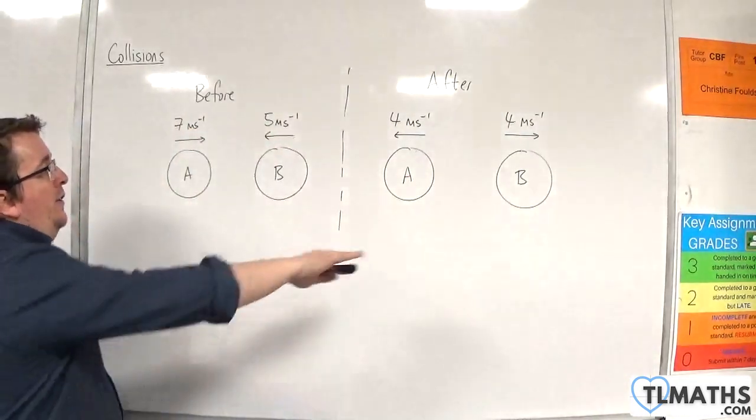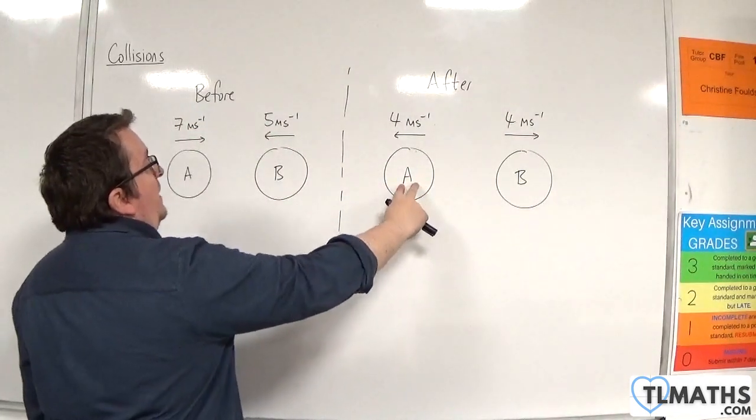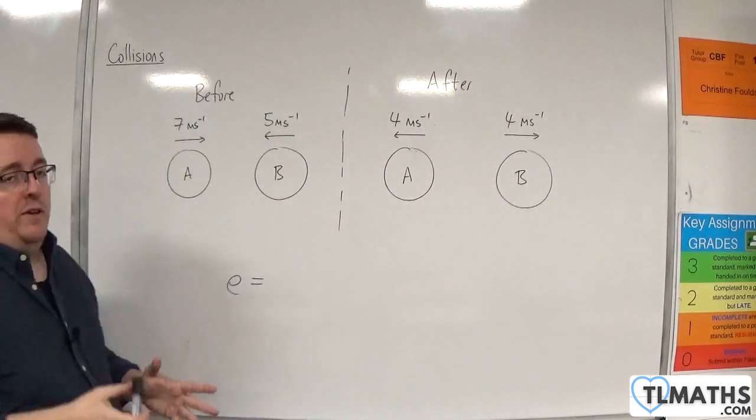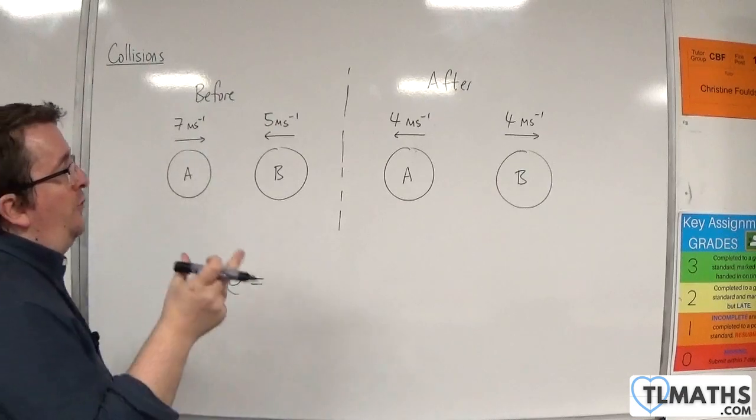After the collision, A has a velocity of minus 4 metres per second, and B has a velocity of 4 metres per second. So the coefficient of restitution is the speed of separation,